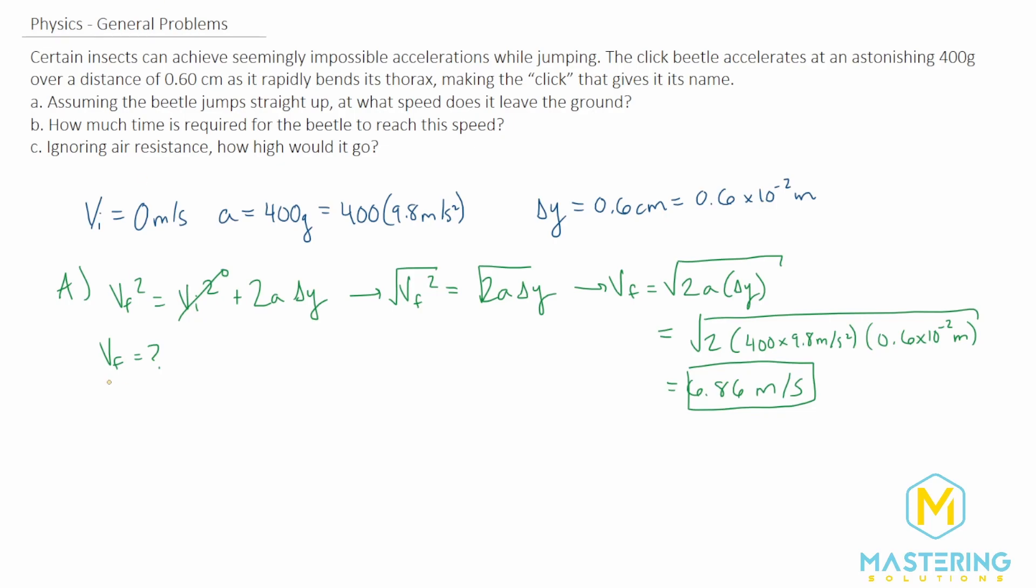Now when we go to part B, we need to figure out how long it takes to be able to reach that speed. So let's find an equation that has t in it. This one is easier. We can actually just use the basic acceleration formula, which is the change in velocity over the change in time. We need to isolate the change in time. So we'll multiply both sides by t. So we have the change in velocity is equal to the acceleration times the time.